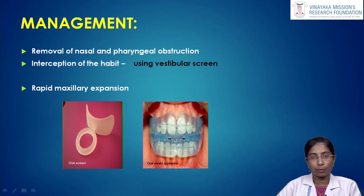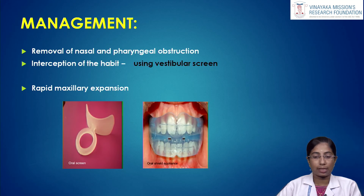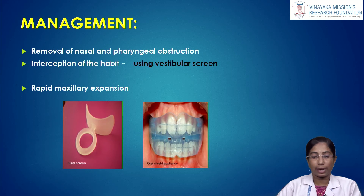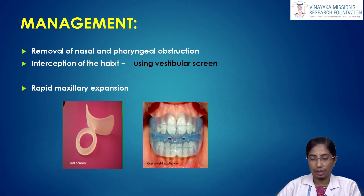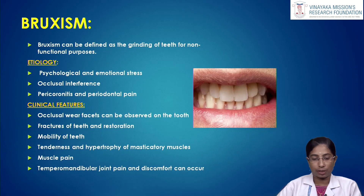Management of mouth breathing includes removal of the anatomical defect causing nasal or pharyngeal obstruction, interception of the habit using a vestibular or oral screen, and rapid maxillary expansion to expand the maxilla. Expanding a constricted maxilla helps relieve nasal obstruction.